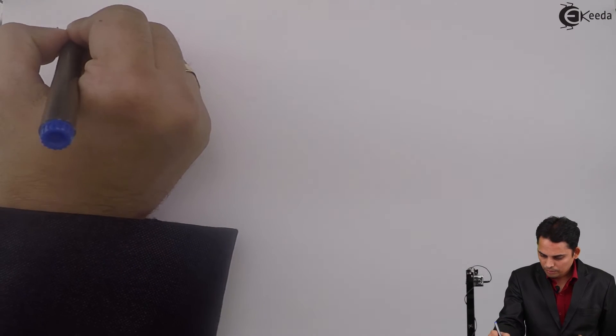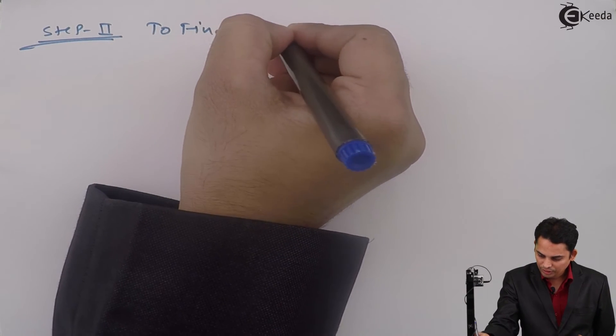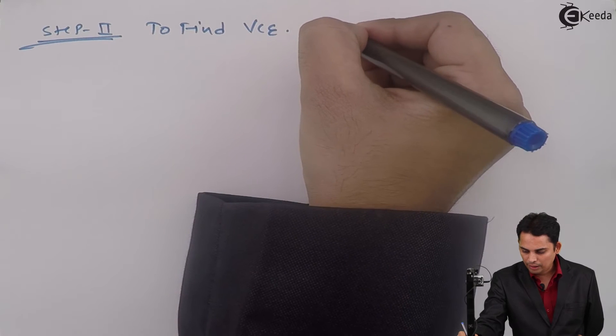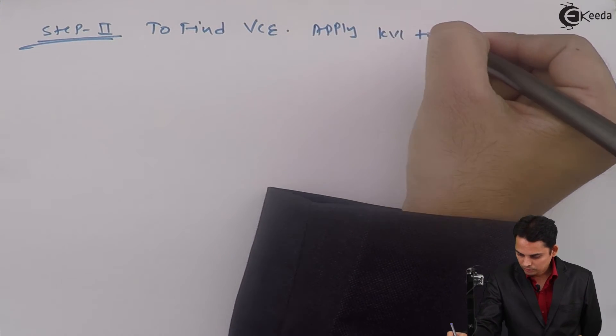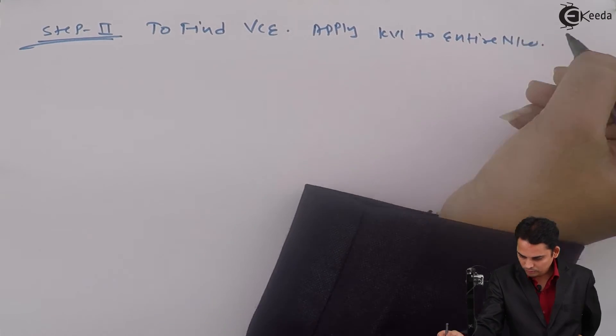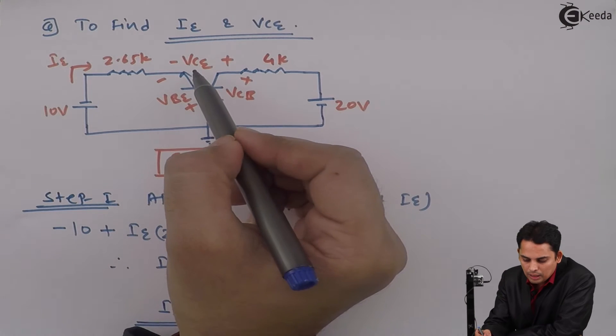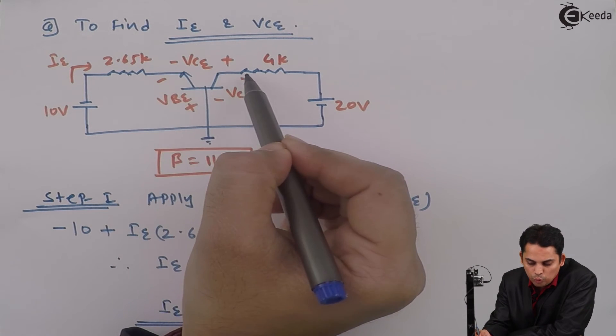Next step is to find VCE, for which we will apply KVL to the entire network. That is because the collector to emitter voltage is coming between these two points.